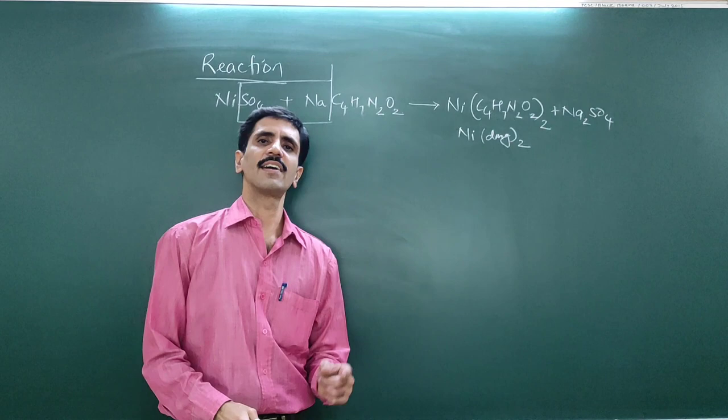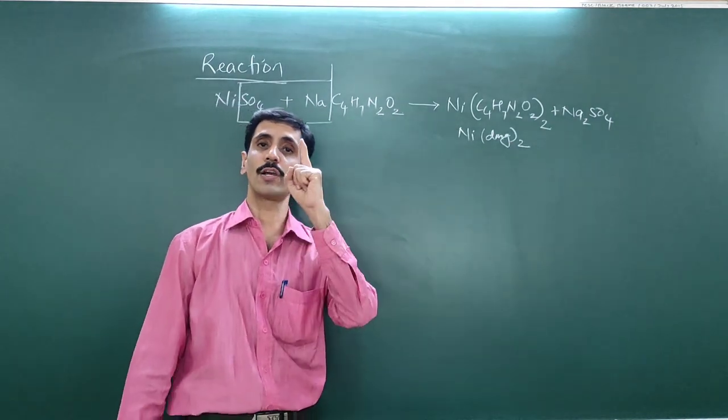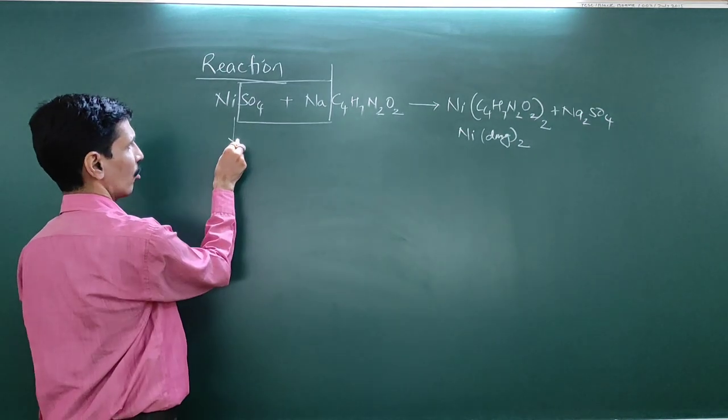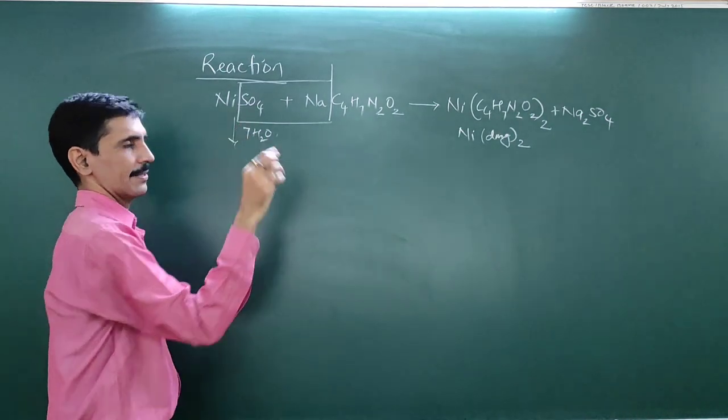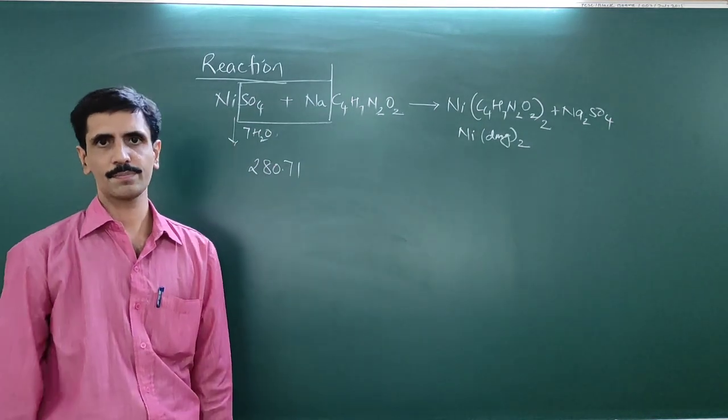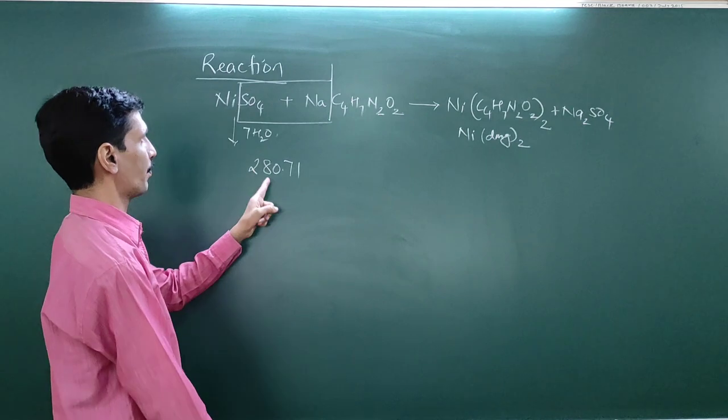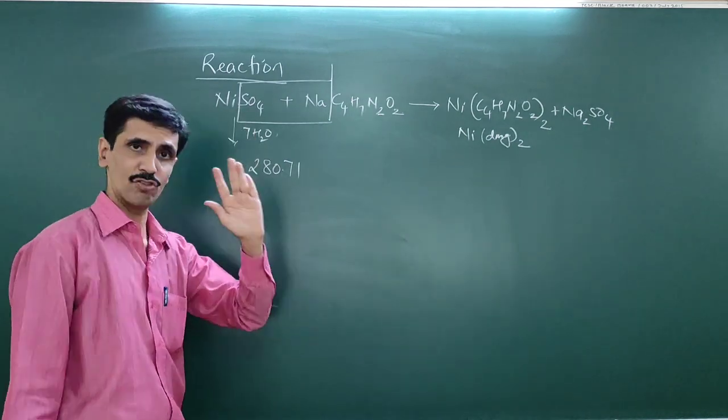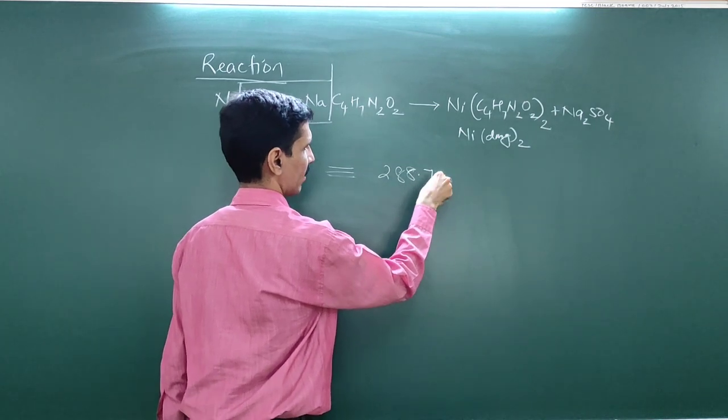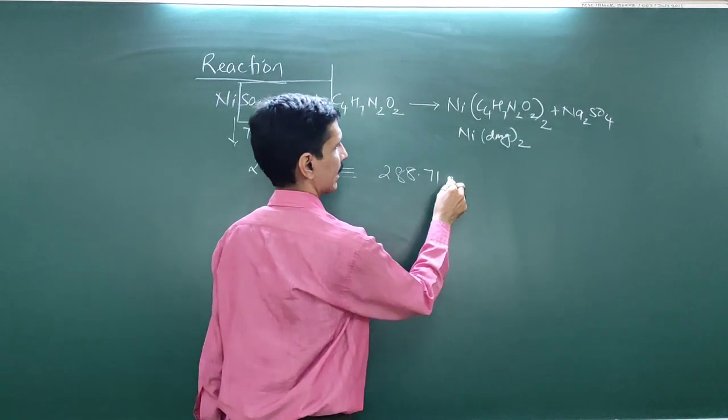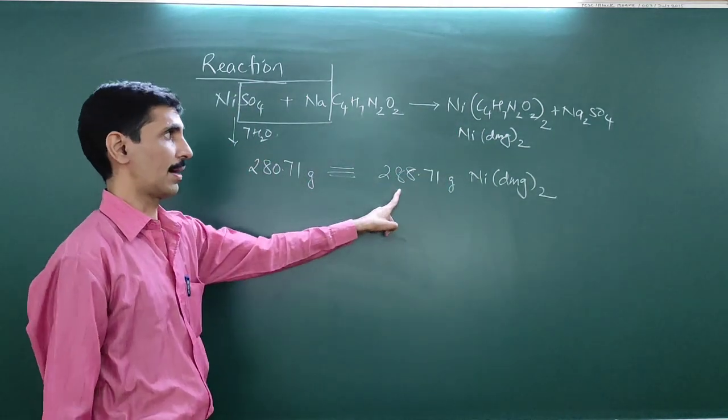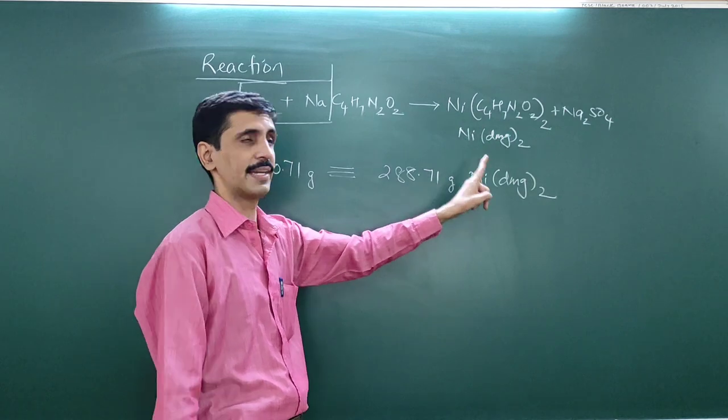Now we are going to, once the reaction is clear, use stoichiometric proportion. My dear friends, we are going to use these calculations to find out the theoretical yield. We need to consider there are also 7 water molecules coordinated with nickel sulfate. So 280.71 grams of nickel sulfate heptahydrate is corresponding to 288.71 grams of nickel DMG twice. This is the molar mass. 288.71 is the molar mass of nickel DMG twice. Nickel is 58.71, that is the atomic mass. Carbon is 12, nitrogen is 14, oxygen is 16, hydrogen is 1. So accordingly we calculate the molar mass.